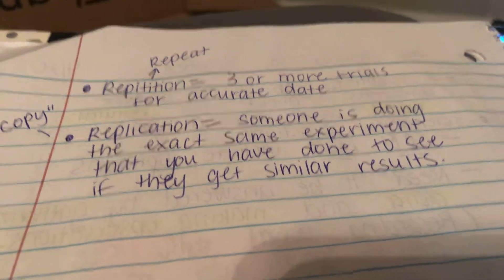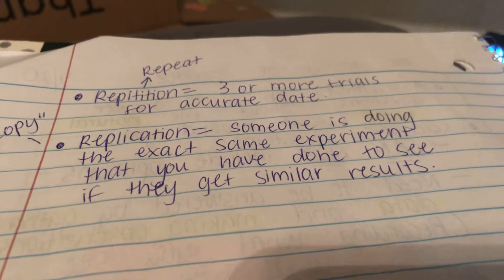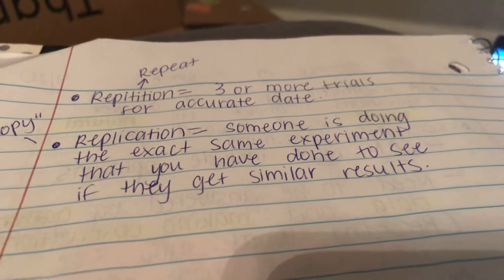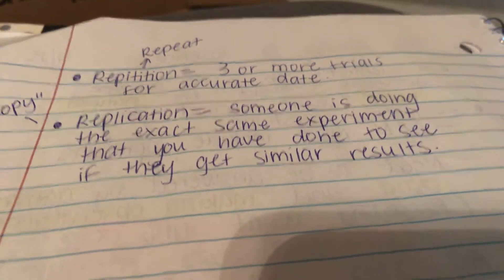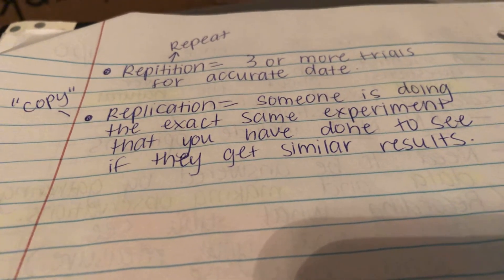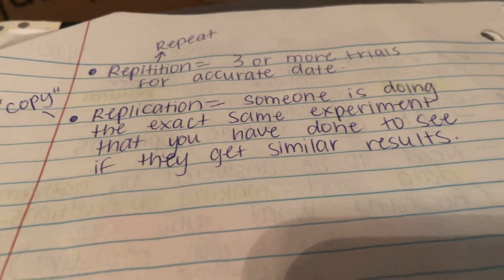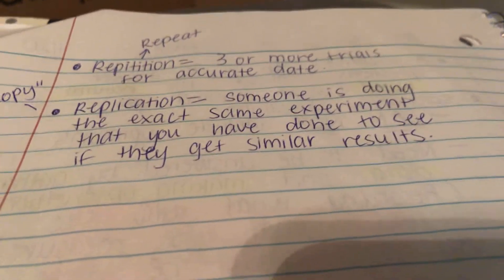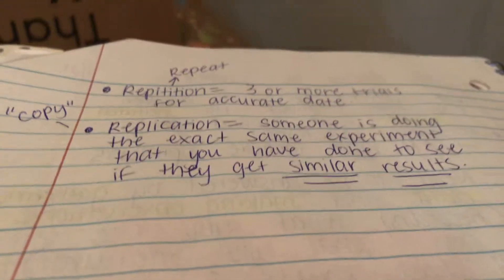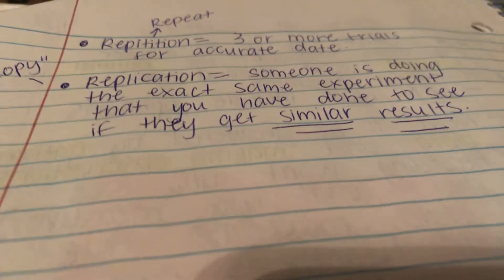Repetition is repeat — so three or more trials for accurate data. You're doing the same thing at least three times to see if you get similar results each time. Replicate is copy — either you're copying somebody else, or somebody's copying what you've done to see if they get similar results. If they get similar results, that means your experiment was valid, accurate, or true.